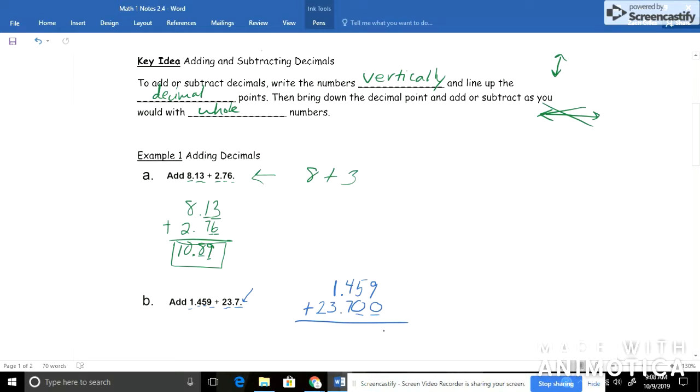And now it's a little bit easier to work with. 9 plus 0 is 9. 5 plus 0 is 5. 4 plus 7 is 11. Carry my 1. And bring my decimal straight down. 1 plus 1 is 2. Plus 3 is 5. And 2 plus nothing is 2. So I'd get 25.159. Or 25 and 159 thousandths.